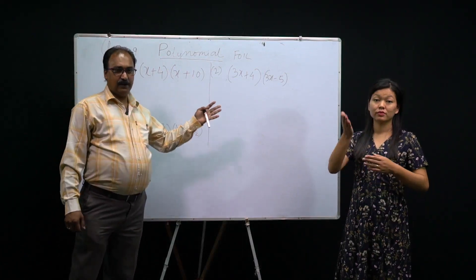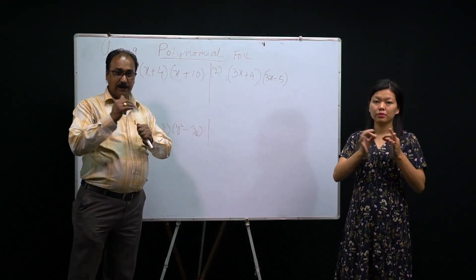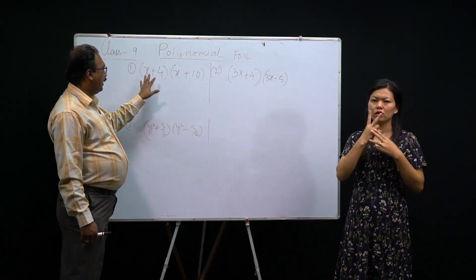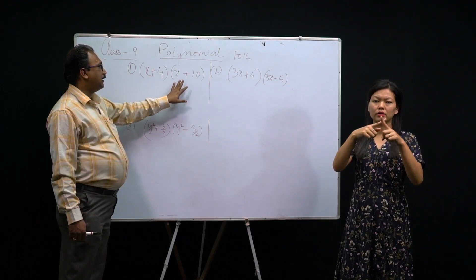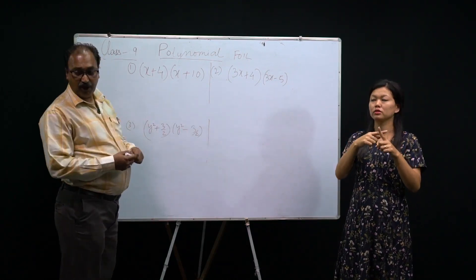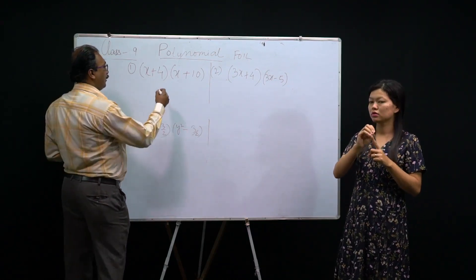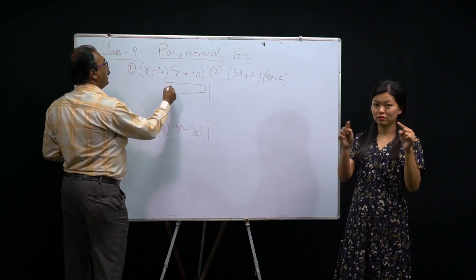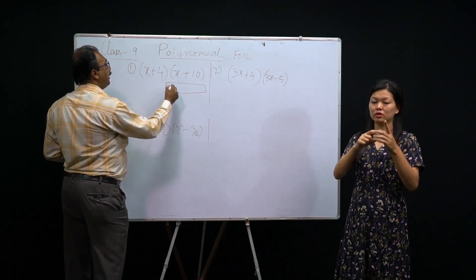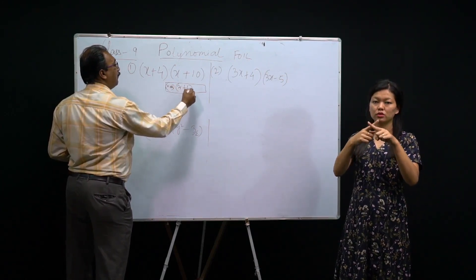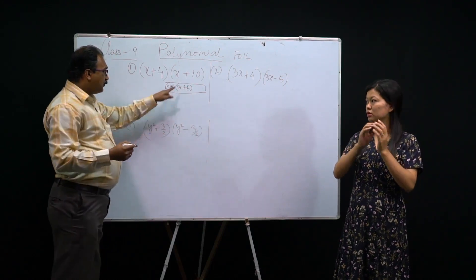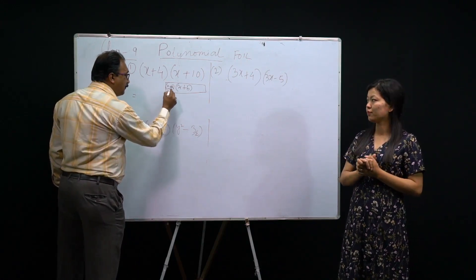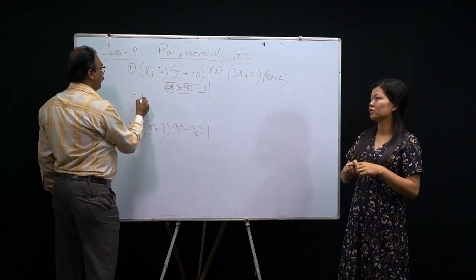Students, last time I explained you the formula. Now we'll apply that formula to questions. Look at here: (x+4)(x+10). How do you solve it? Remember the formula — the formula is (x+a)(x+b). I'm not writing the formula; I'm just telling you this formula you have to apply here. What is the formula? x squared — first term squared.